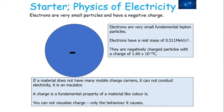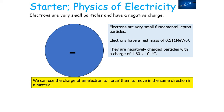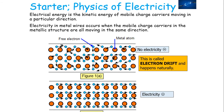If a material does not have many mobile charge carriers, it cannot conduct electricity — it is what we call an insulator. Charge is a fundamental property of a material, like colour. You can't visualise charge, but only observe the behaviour it causes. Electrical energy is the kinetic energy of mobile charge carriers moving in a particular direction. Electricity in metal wires occurs when the mobile charge carriers in the metallic structure are all moving in the same direction.